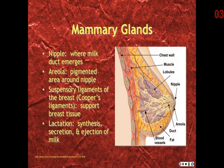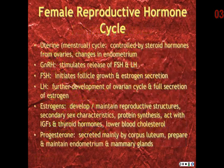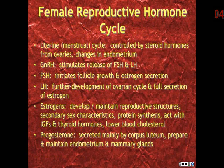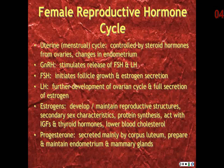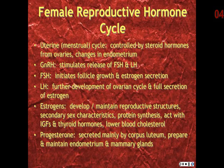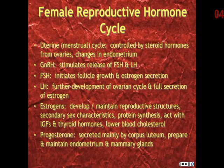The process of synthesizing and secreting milk is lactation. The uterine or menstrual cycle is controlled by steroid hormones from the ovaries and causes changes in the endometrium. The process begins with gonadotropin-releasing hormone and the release of FSH and LH from the anterior pituitary. FSH initiates the growth of the follicle and estrogen secretion, while LH further develops the follicle and leads to full secretion of estrogen.